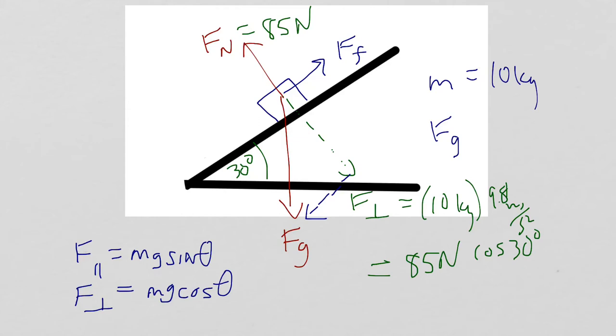So, let's do it. F parallel, which in this case is F force of friction, and what does that equal to? Well, my mass, 10 kilograms, my g, 9.81 meters per second squared, and, of course, now I need the sine of 30 degrees.